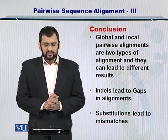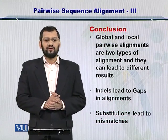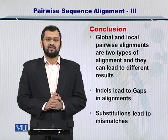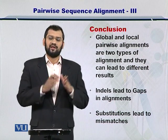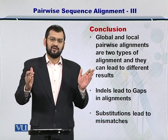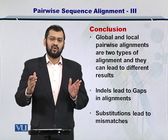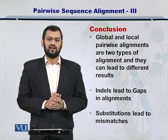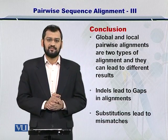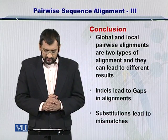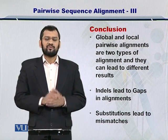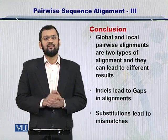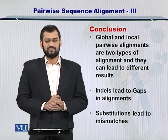In conclusion, global and local pairwise alignments help you to compare either the entire sequences or portions within the sequences in an exact fashion. Indels lead to gaps in the alignments, while substitutions may lead to mismatches.